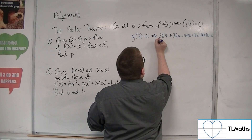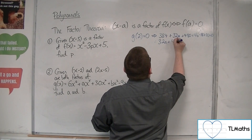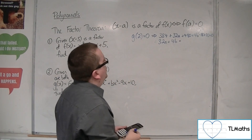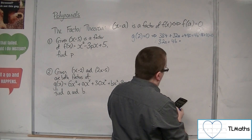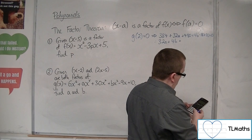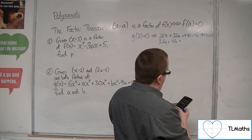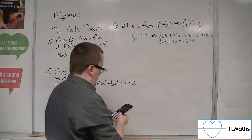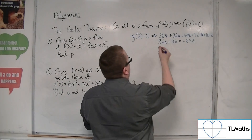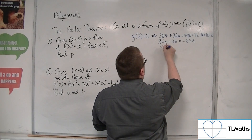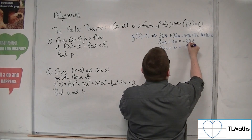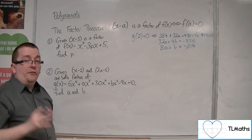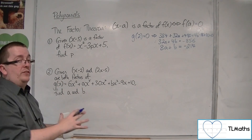Tidying that up, we get 32a plus 4b, and moving everything else to the right-hand side: 384 plus 480 minus 18 plus 10 gives minus 856. Dividing everything through by 4, we get 8a plus b equals minus 214. That's the first equation.